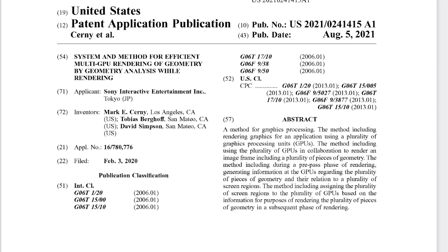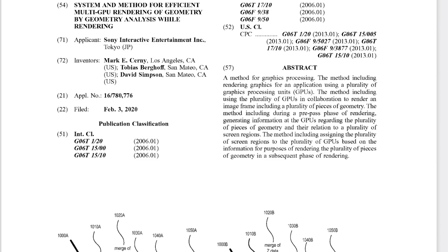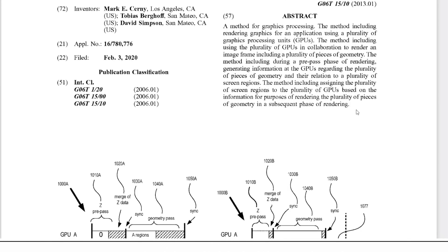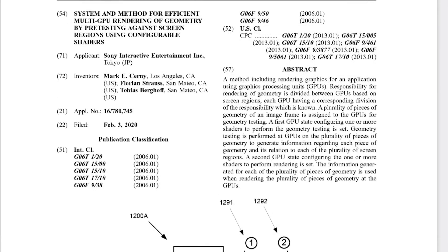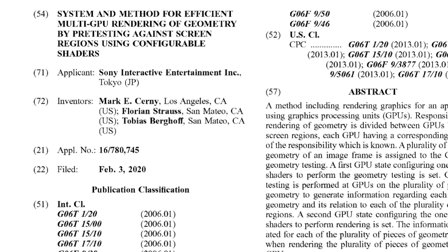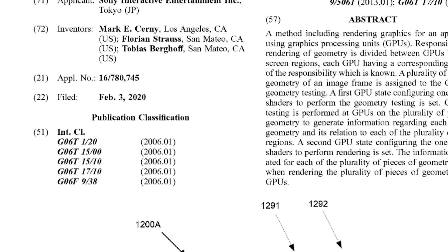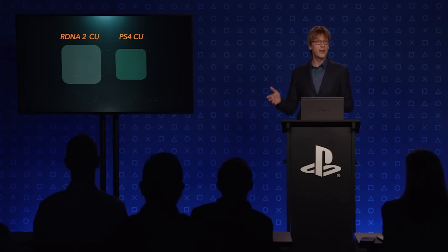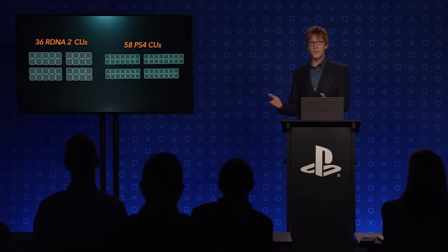So the quick overview here of these patents is that they are for multi-GPU rendering. One of the titles is System and Method for Efficient Multi-GPU Rendering of Geometry by Geometry Analysis While Rendering. And we also have a second one: System and Method for Efficient Multi-GPU Rendering of Geometry by pre-testing against screen regions using configurable shaders. The patent application for this is Sony Interactive. And perhaps unsurprisingly, one of the key inventors here is Mark E. Cerny.